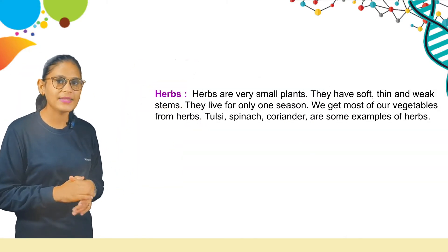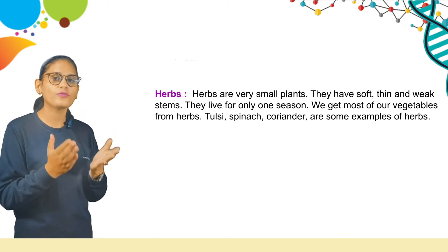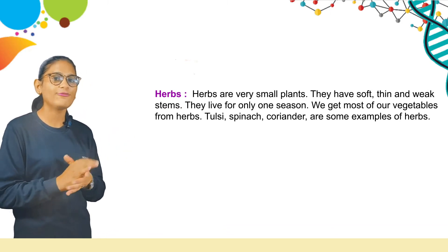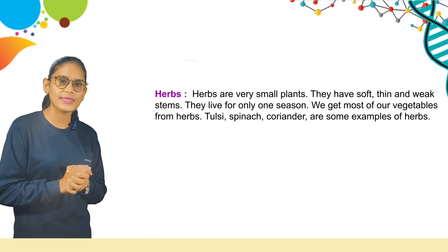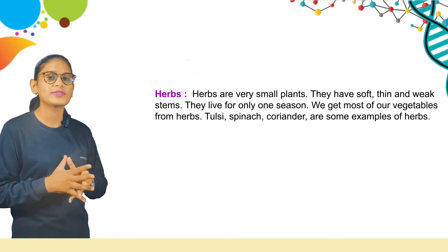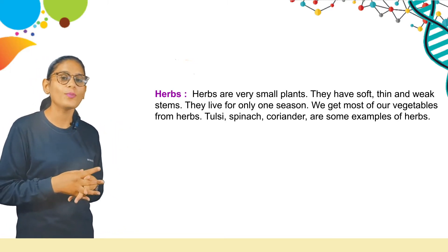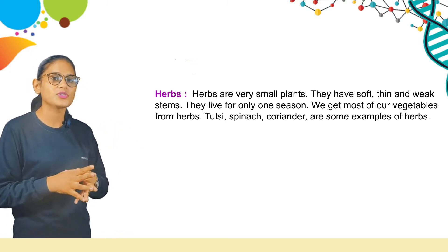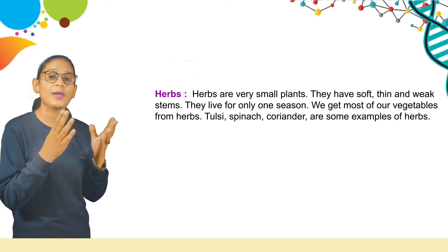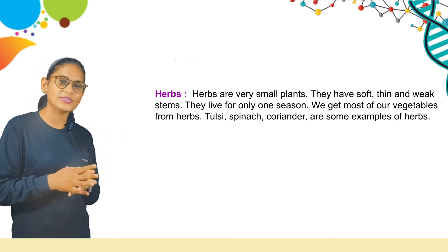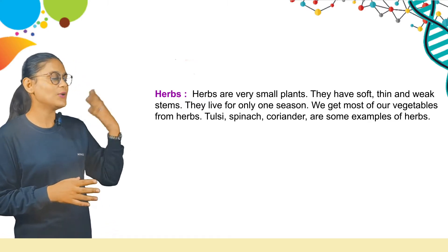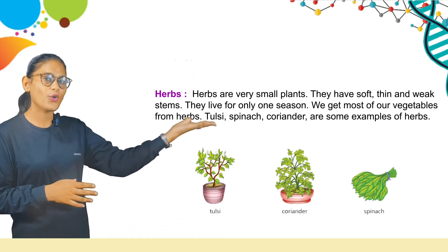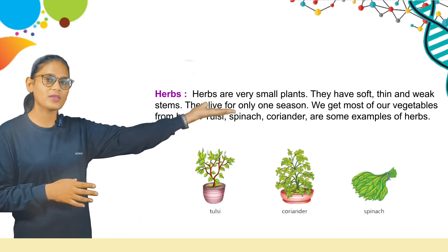Herbs are very small plants. They have soft, thin, and weak stems. They live for only one season. We get most of our vegetables from herbs. Tulsi, spinach, and coriander are some examples of herbs. Here are some pictures: tulsi, coriander, and spinach.